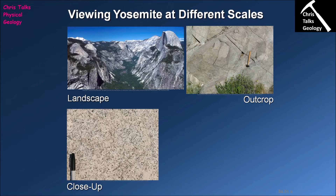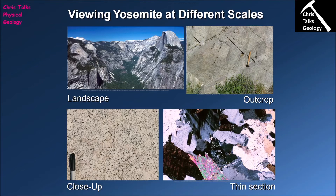The final step a geologist can take is making a thin section. This involves taking a piece of rock back to the lab, slicing it to just 30 microns thick — that's 0.03 millimetres — and gluing it onto a glass slide. The slice has to be that thin because that thickness allows light to pass through most minerals so we can identify them using a microscope.